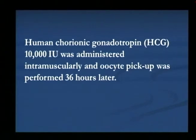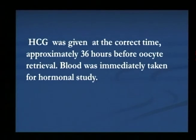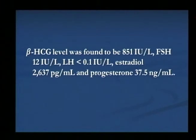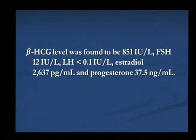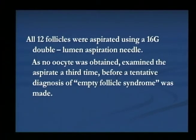HCG was given intramuscularly and pick-up was done 36 hours later. HCG was given at the correct time, approximately 36 hours before oocyte retrieval, and blood was taken for hormonal study. Because this patient had a disordered growth in the early stage, we correlated with beta HCG. Results showed beta HCG approximately 851 international units per litre, FSH 12, LH less than 0.1, estradiol 2016.37, and progesterone 37.5. The progesterone level of 37.5 is important. Hormonal study was undertaken at the time of aspiration, 36 hours after HCG was given.